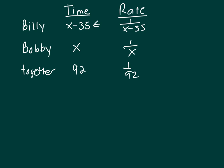Now think about it. If you want to write an equation and you want to represent Billy and Bobby working together, that would be 1 over X minus 35. Your equation always comes from the rate. 1 over X minus 35 plus, because he's working together with Bobby, and that would equal the together.